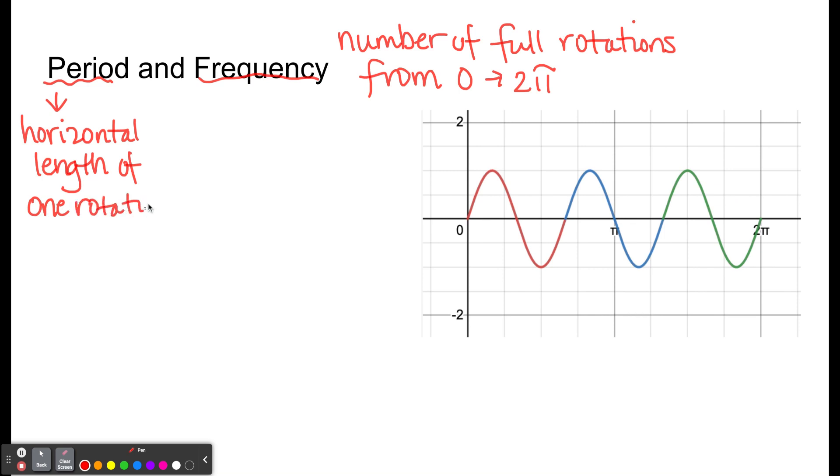So the relationship between these two very much goes back to 2π. 2π is the parent, 2π is one normal rotation around the unit circle, so we're always comparing back to 2π.